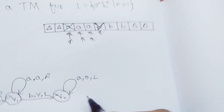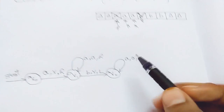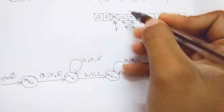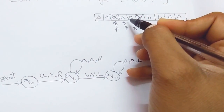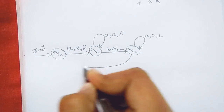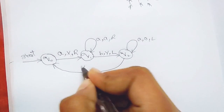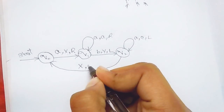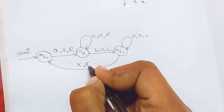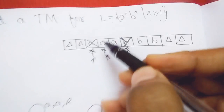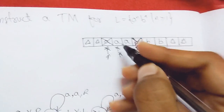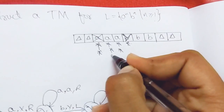Now there is X, meaning this A is already processed. I'll go back from q2 to q0 to start the process again. So from q2, whenever the machine sees X, it should be replaced with X and move right — X is already processed, so X is replaced with X itself and the header moves right.